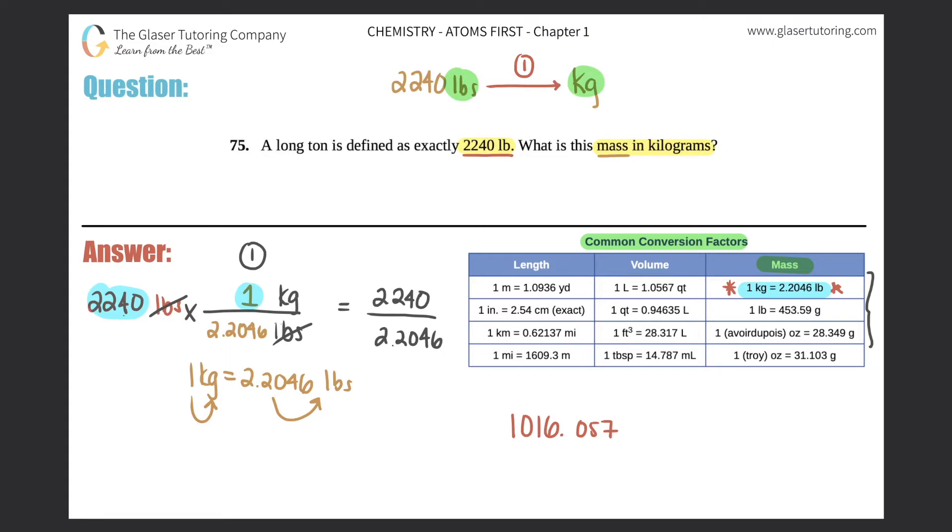Now we just need to put the right sig figs. In our given, remember you only take the number of sig figs you're given. There are three sig figs here. Why? Because the 2, 2, and the 4 count. The 0 does not count because this is a trailing 0.